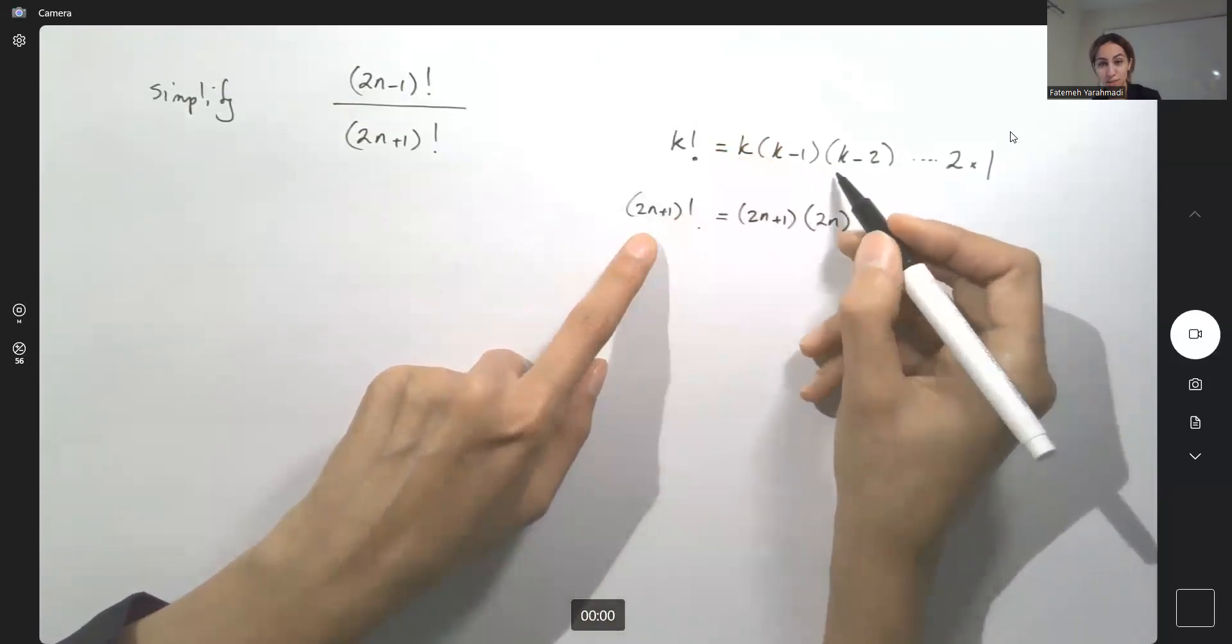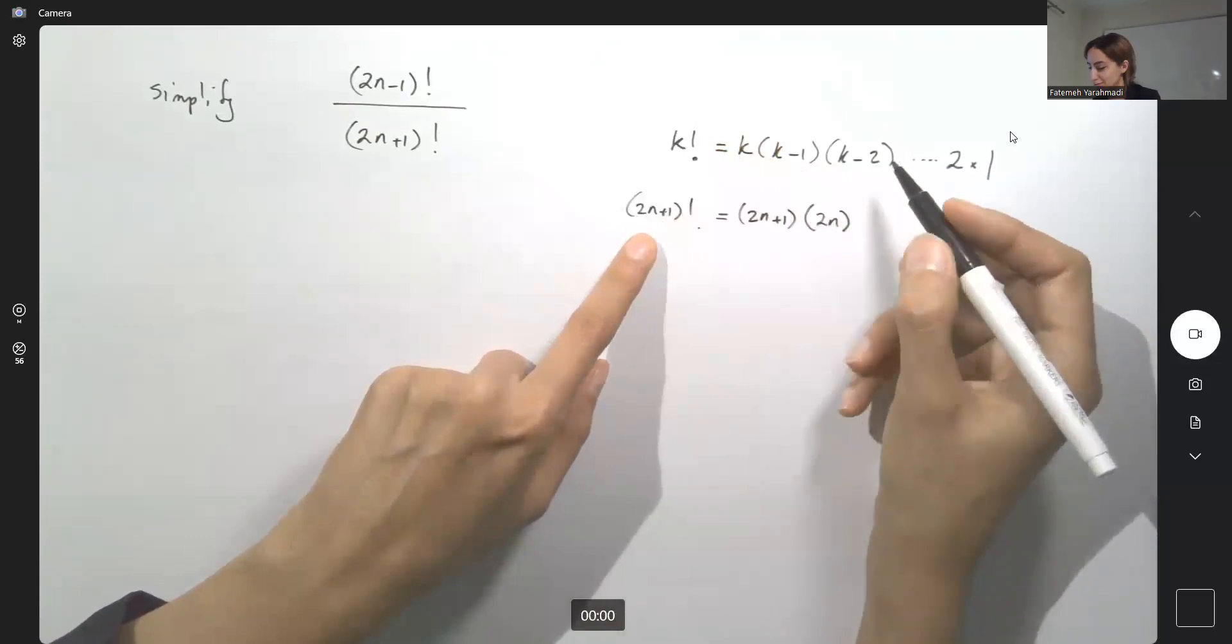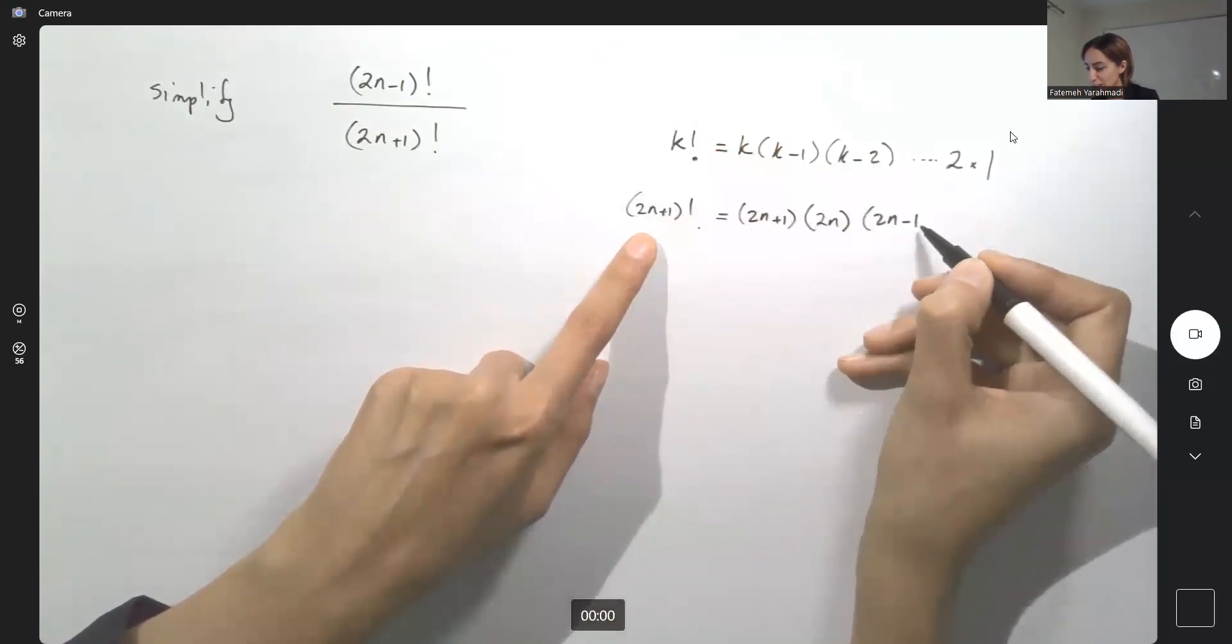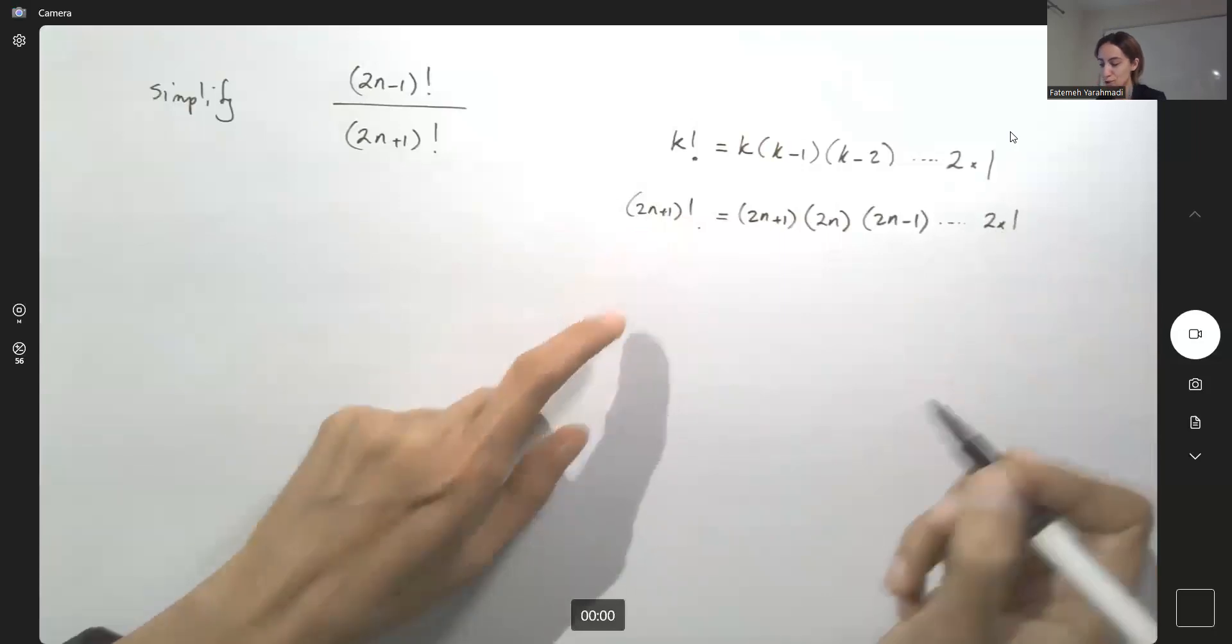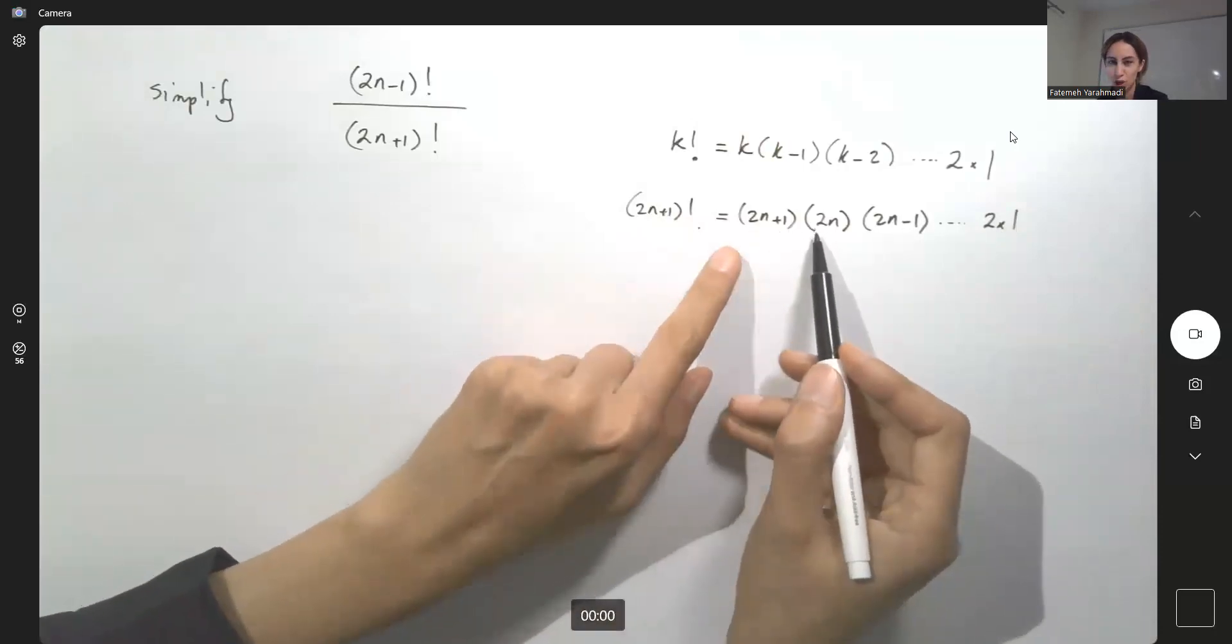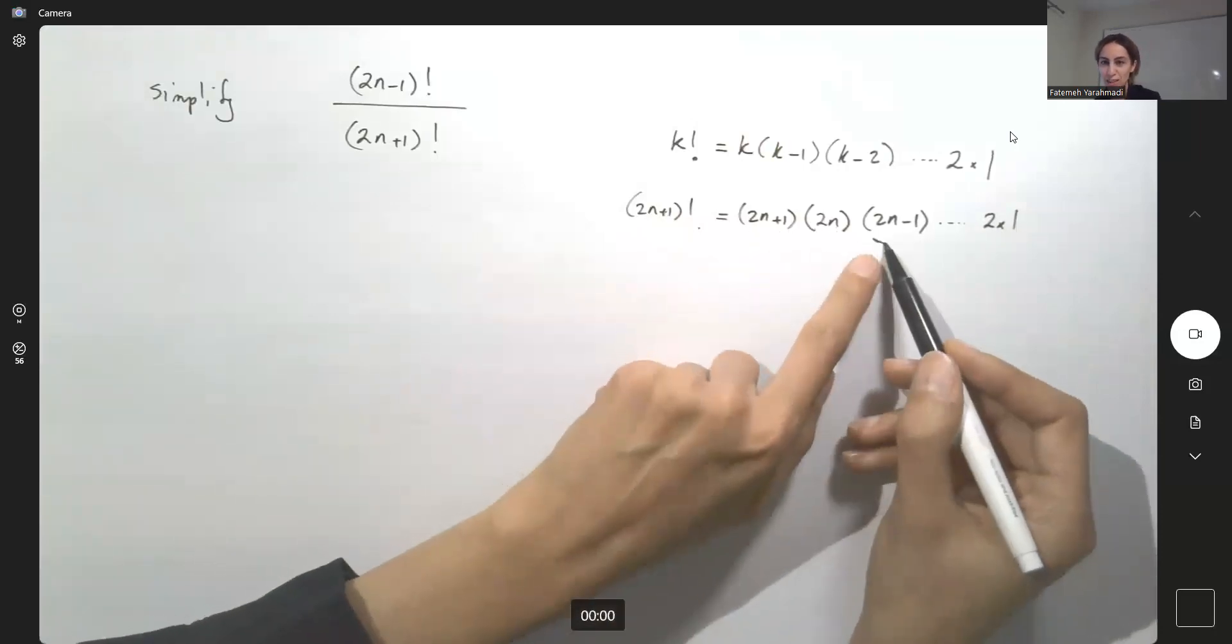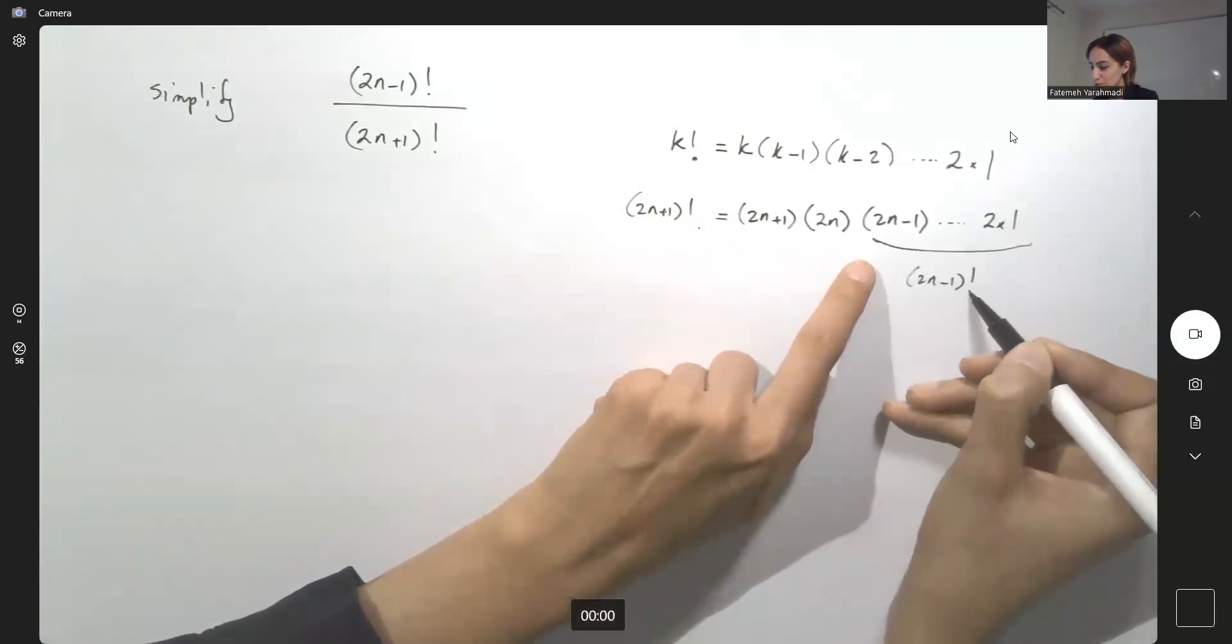2n, times 2n plus 1 minus 2 becomes 2n minus 1, multiplied by 2 times 1 and so on. So what do you have here? You have 2n plus 1 times 2n and the rest of this is going to be 2n minus 1 factorial.